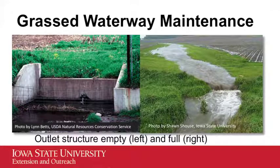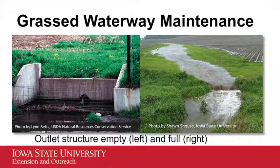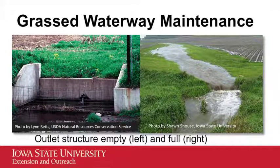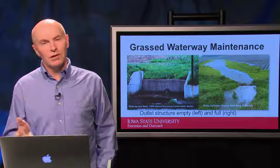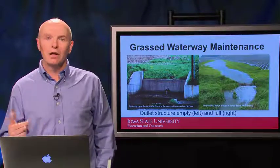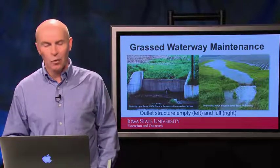Here's what outlet structures are. These are built at the end of a waterway, or any place where the water level has to drop suddenly. Most commonly you'll see these where the waterway empties into a road ditch, or where the waterway has a drop from a higher level of the field to a lower level. Here are examples showing an outlet structure when it's empty and one that's full of flowing water. These are out there so that flowing water making a sudden drop doesn't start eroding a gully back upstream in the waterway.